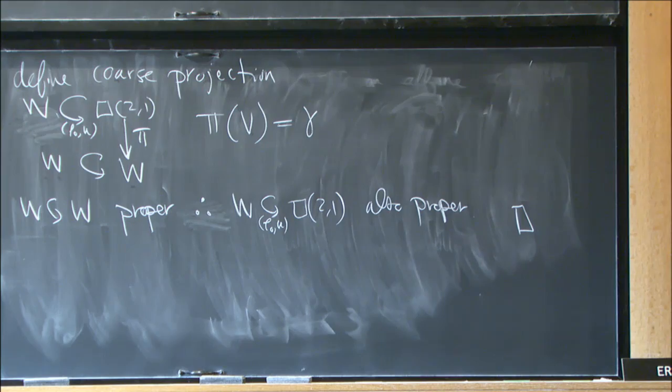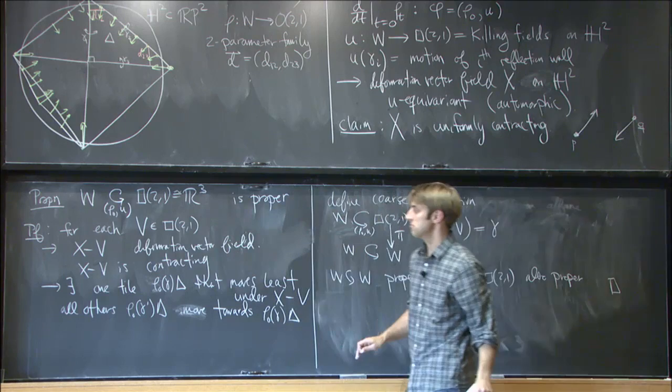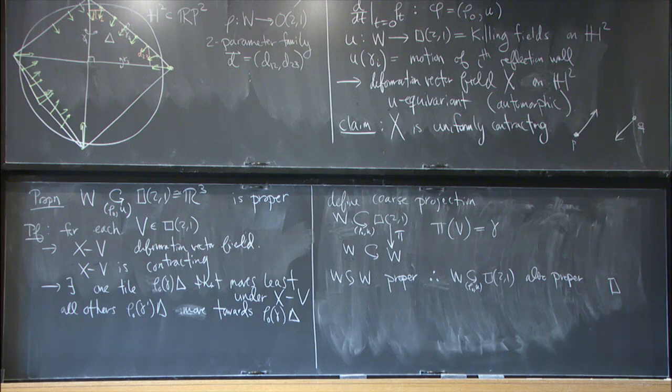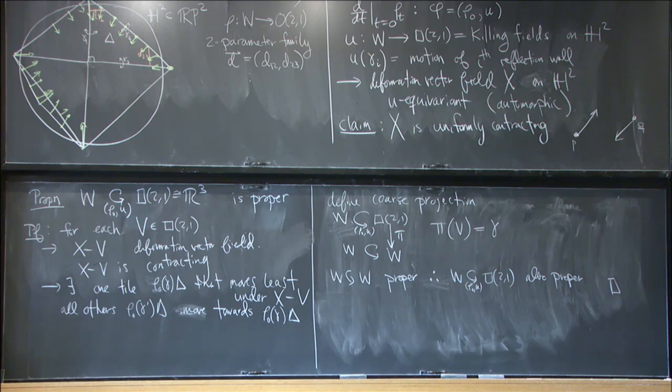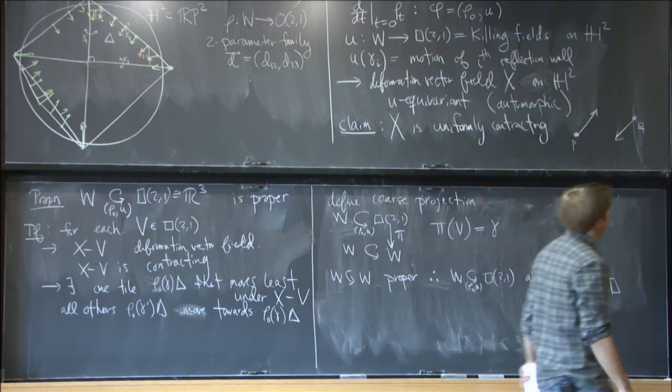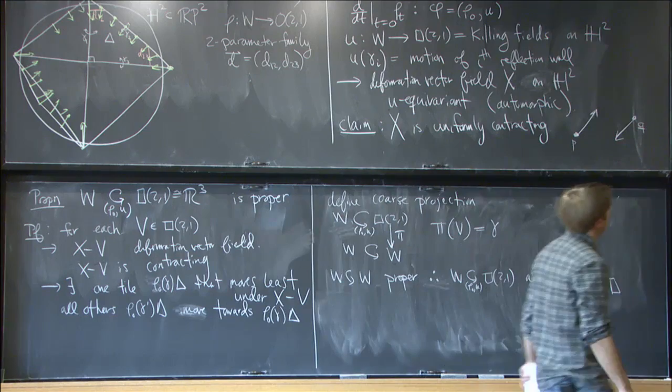In the case of R^3, essentially all proper actions of non-solvable groups come in this way. You've already noticed that secretly this right-angled Coxeter group is virtually a free group. In the last ten minutes, let me tell you how to do this for a general right-angled Coxeter group W, generated by k generators of order two, where some commute and others do not.